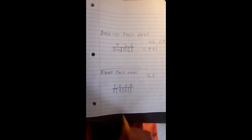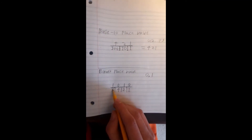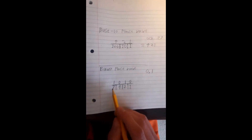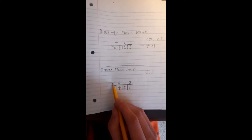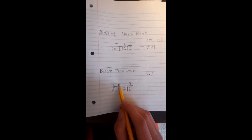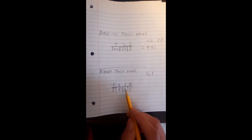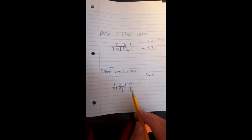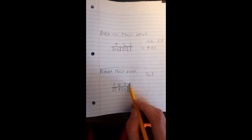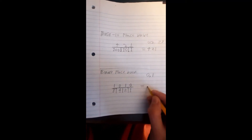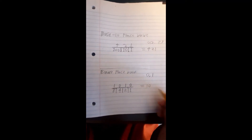Now how this is calculated is by doing eight times one plus four times zero plus two times one plus zero times one, and that is equal to 10.